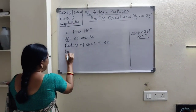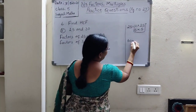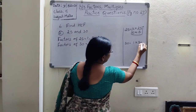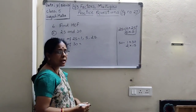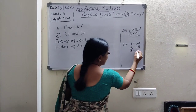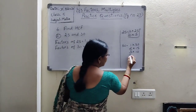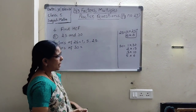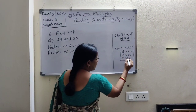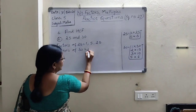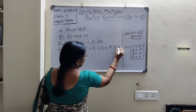Next, factors of 30. 1 is a factor. 2 is a factor — 2 times 15 is 30. 3 is a factor — 3 times 10 is 30. 4 is not a factor of 30. 5 is a factor. 6 is a factor. 7 and 8 — no. So the factors of 30 are 1, 2, 3, 5, 6, 10, 15, 30.